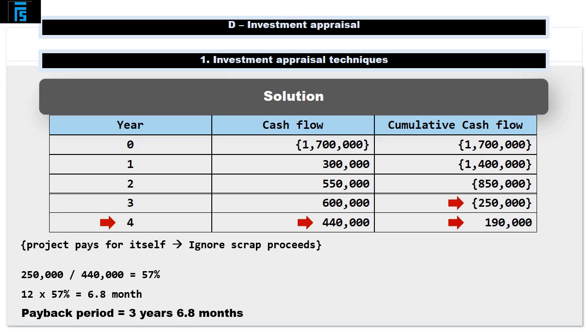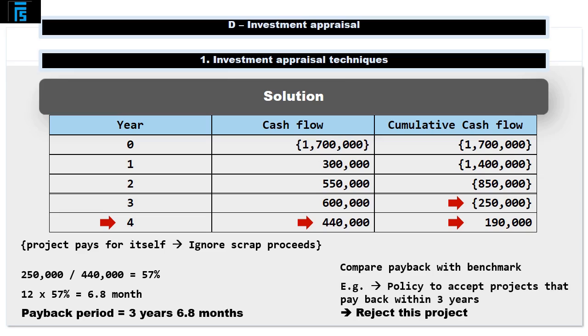In order to decide whether or not to proceed, the payback period calculated needs to be compared to some relatively arbitrary benchmark. For example, the company may say we only accept projects that pay back within 3 years. In which case, we would reject this project as it takes longer than 3 years to pay back.